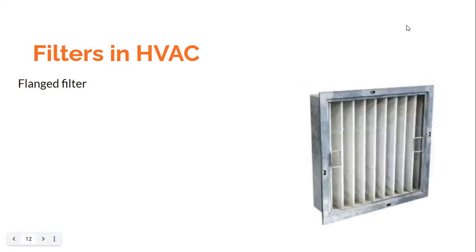The next type comes with a flange around it, and the flange is on either the entry side or the exit side, and sometimes on both sides. What does the flange do? It allows the filter to be rigidly mounted on the mounting frame. We can use a clamp or a bolt-and-nut arrangement. Because of the flange, one can use a bolt-and-nut arrangement or a clamp, giving a good leak-free fit. This is a flange filter — by looking at the diagram you should be able to identify it.